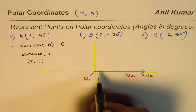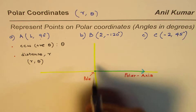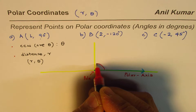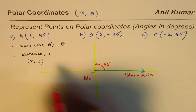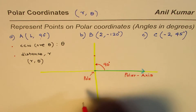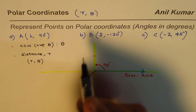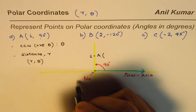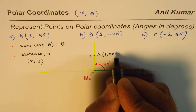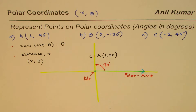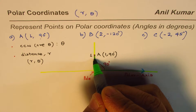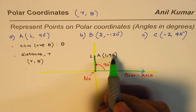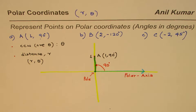For point A (1, 90°): starting from the initial arm, rotate counterclockwise 90 degrees. Once I do that rotation I reach this direction. One unit away — that's my first circle. So this point here is the coordinate point A. I'll join it with a line segment from the pole; it's always a fixed point, not a ray. This segment represents point A at (1, 90°).